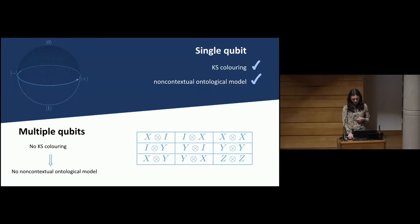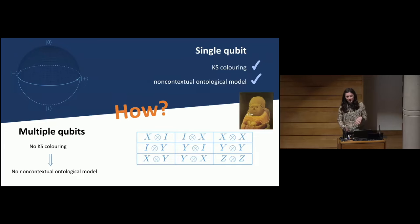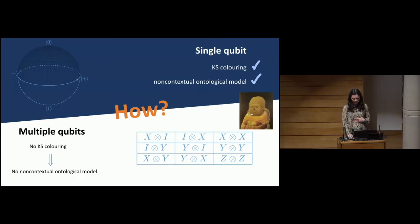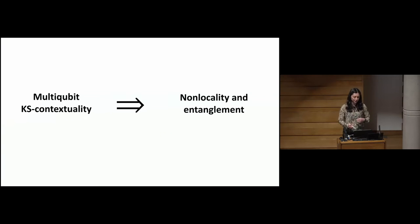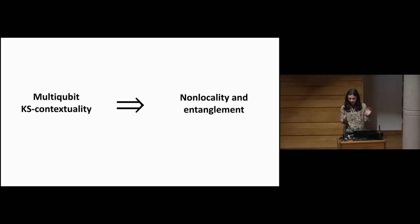So Ravi and I were looking at this and asked: why, or more specifically, how? What's the difference between a single qubit and multiple qubits? You might think: entanglement, or non-locality — these are phenomena that appear in multi-qubit scenarios. One of the classic proofs of the Kochen-Specker theorem for two qubits is the Peres-Mermin square, and in that formulation it looks like there's no entanglement. What I'm going to argue is that multi-qubit Kochen-Specker contextuality requires both non-locality and entanglement — not just one or the other, both at the same time.